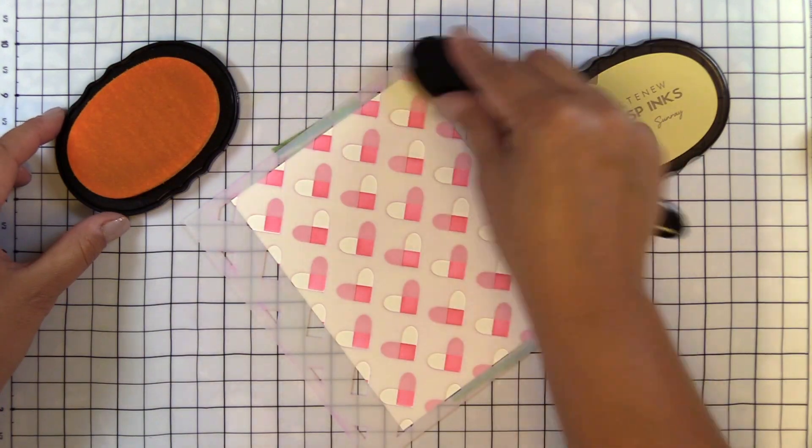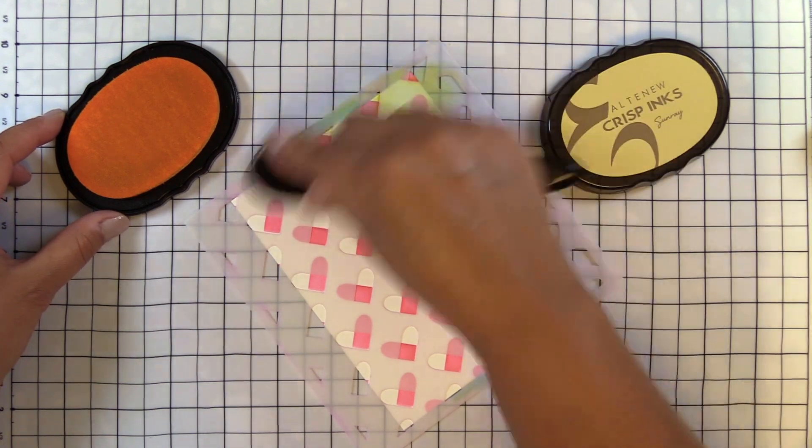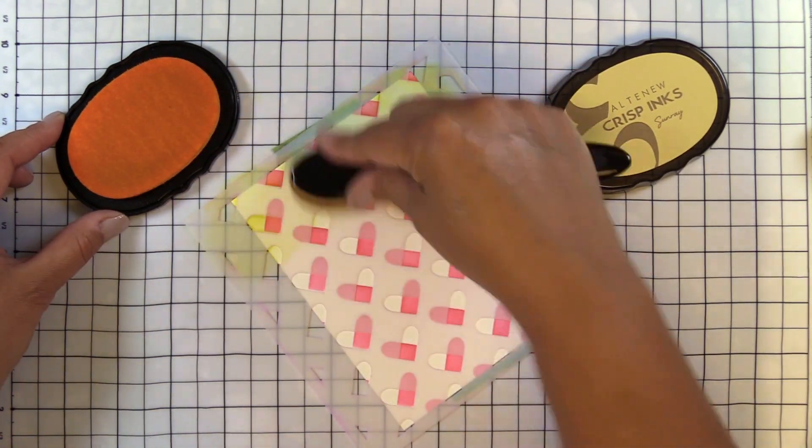Simply add color through the stencil, clean off, flip over, and add color again to add fun modern hearts.